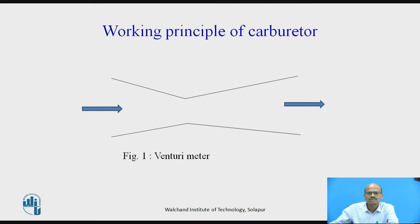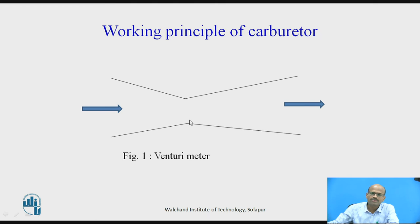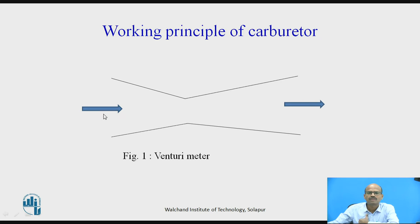This is the schematic diagram of the Venturimeter. How the Venturimeter works? This is the convergent portion and this is the divergent portion. These convergent and divergent portions are connected to each other — this is called a Venturimeter. When any fluid flows through the Venturimeter, there is an increase in velocity and pressure decreases. In the divergent portion, it increases by a small amount, but the exit pressure is always less than inlet pressure.